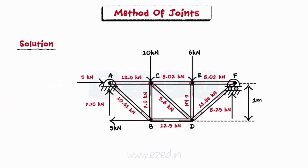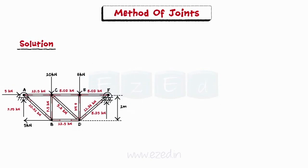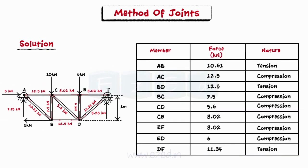Thus, we have found forces in all the members of the truss. We finally tabulate the results as shown. The table indicates the member, the magnitude of the force acting on it, and the nature of the force. Thus, we have analyzed the given truss using the method of joints.